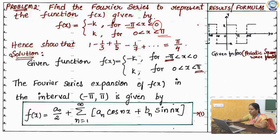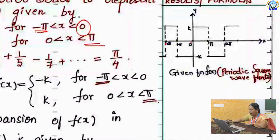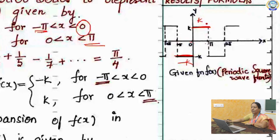See the value of f of x from minus pi to 0: your function f of x equals to minus k. And from 0 to pi, your function is f of x equals to k. Since it is a periodic function, we can represent it like this.